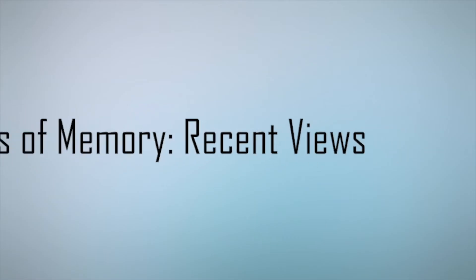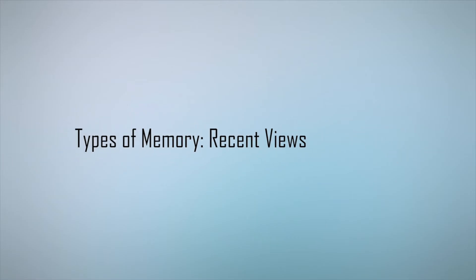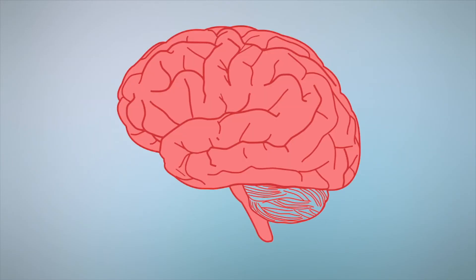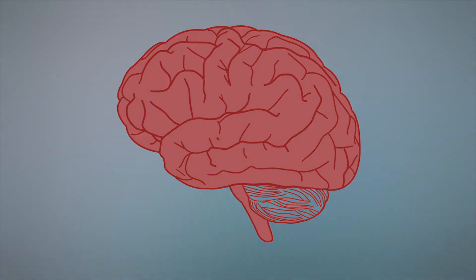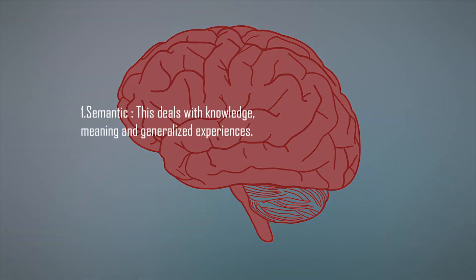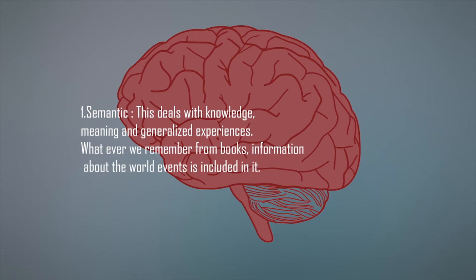Types of memory as per recent views: in recent years, psychologists have conceptualized memory into four types. Semantic memory deals with knowledge, meaning and generalized experiences — whatever you remember from books, information about the world and events is included in it.